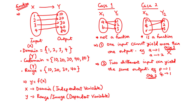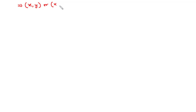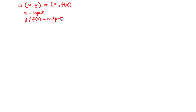Now let's focus on how to graph a few common functions. A function f establishes a set of ordered pairs of real numbers written in the form (x, y) or (x, f(x)), where x is the input and y or f(x) is the output. The plot of these ordered pairs on a coordinate system is the graph of a function, giving a pictorial representation of the function. We will consider four common functions and try to graph them.